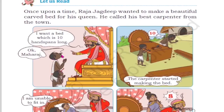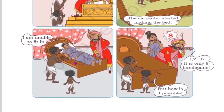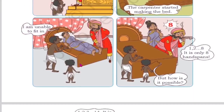The carpenter said 'okay Maharaj' and started making the bed as per the king's instruction - 10 handspans long. Now look at the third picture. The queen lies on the bed and says 'I am unable to fit.' The bed turned out to be small. The queen is tall, so her feet are coming out of the bed. The bed is too short for the queen.